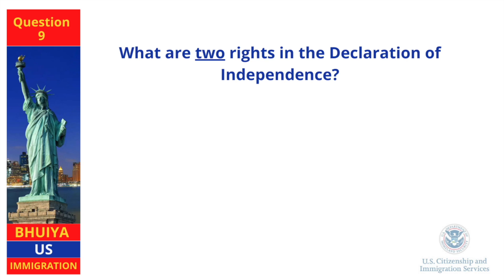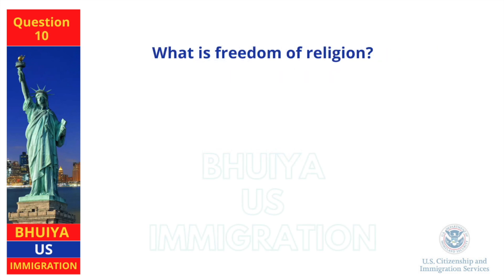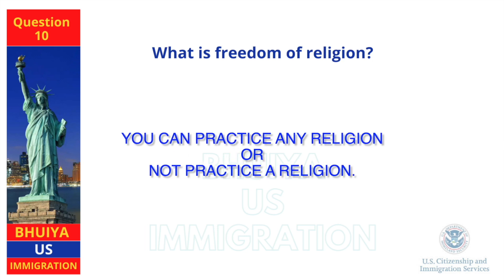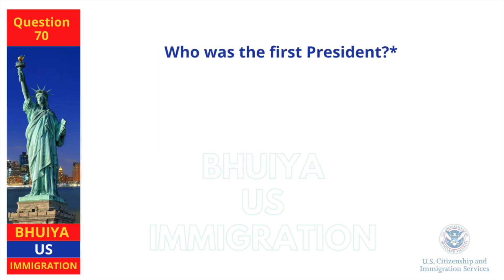What are two rights in the Declaration of Independence? Life, liberty. What is freedom of religion? You can practice any religion or not practice a religion. Who was the first president? George Washington.